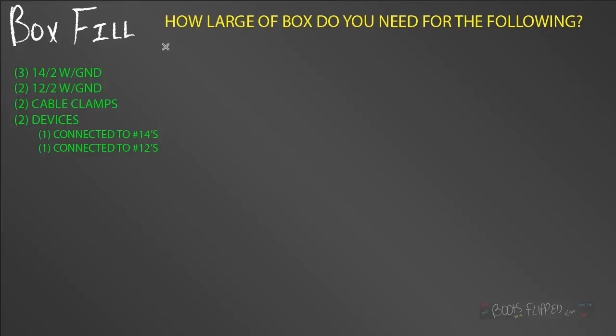Well, let's do this one. Remember, number 14s equal two cubic inch. And now I have another size wire, number 12s. And if we looked on our table, we know that the number 12s equal 2.25 cubic inch. So, let's start with this one. We have three 14 twos. So, I know that I have three cables times two wires each. That equals six wires times two cubic inch because they are number 14s. That equals 12 cubic inch. I can cross that one off because I've got more wires to deal with and we'll deal with our ground once we get to the larger one.